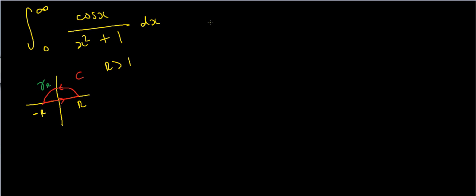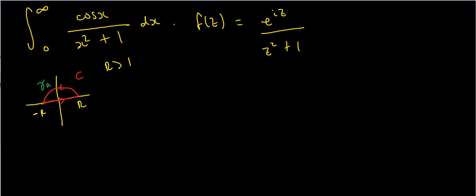Now I've got to define my function. You might think I'd put cosine of z over z squared plus 1, but I'm actually not going to do that. I'm going to use the exponential function: f(z) = e^(iz) / (z² + 1). You'll see why I do that by the end of this video, but in general, if you've got a cosine or sine term, you're going to want to use an exponential function.